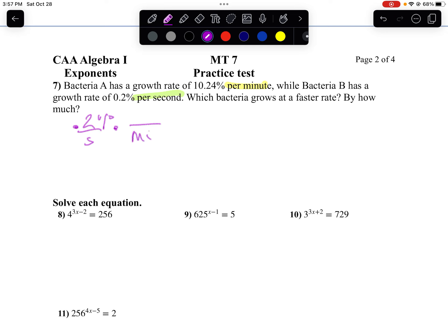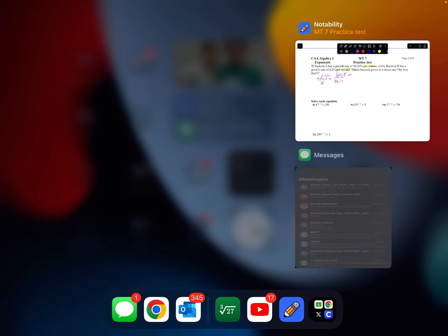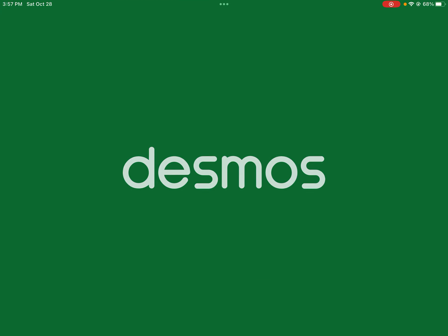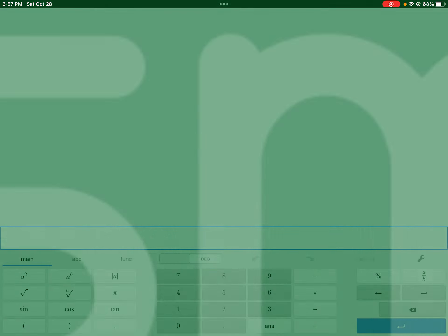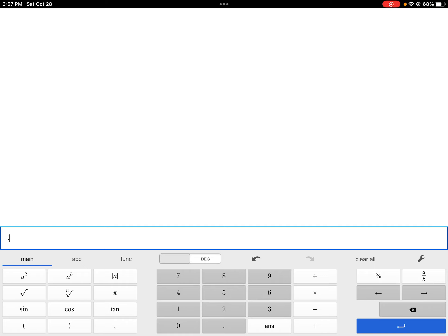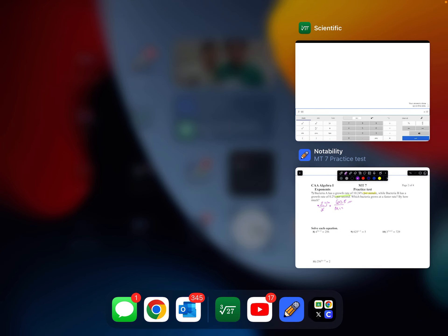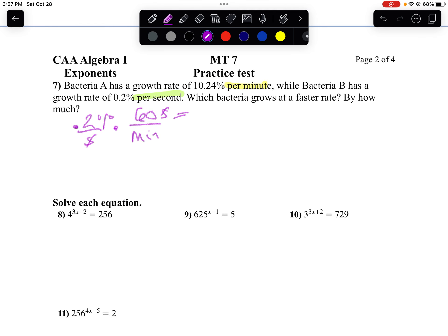Well, I want the minutes in the denominator. I know there are 60 seconds in one minute. That's stuff we did before. So notice I take 0.2 times 60. Let's use our calculator and we'll take 0.2 times 60. That's growing at a rate of 12% per minute.